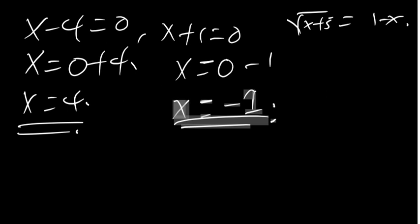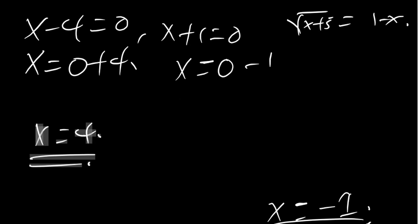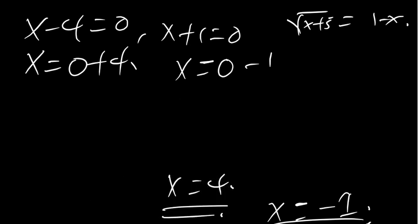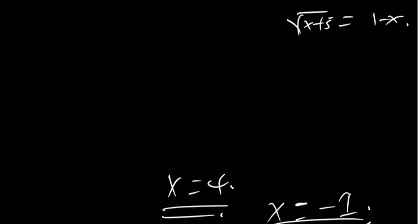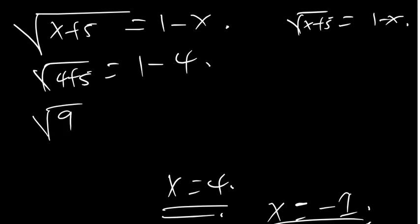We found x equals 4 and x equals negative 1. Our original equation was the square root of (x plus 5) equals 1 minus x. Let's plug in x equals 4: square root of (4 plus 5) equals 1 minus 4, so square root of 9 equals negative 3, meaning 3 equals negative 3. That's false, so x equals 4 is not a solution.